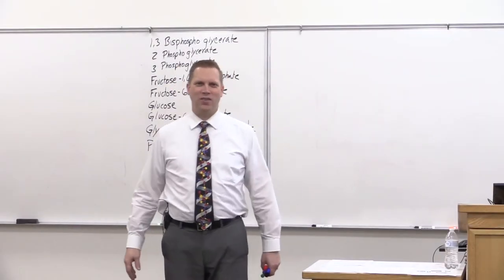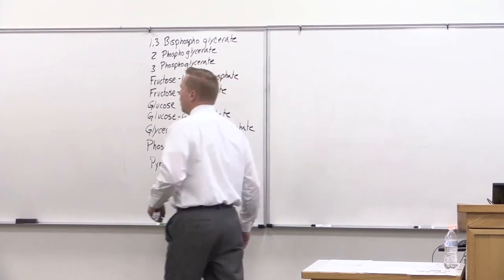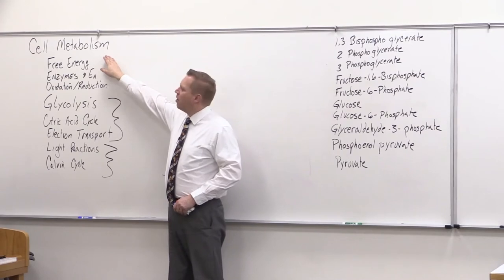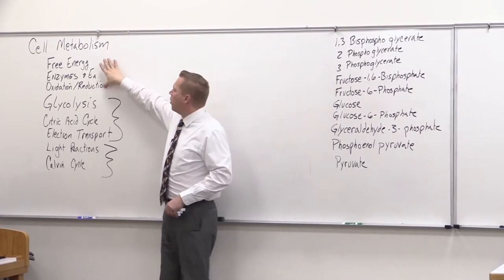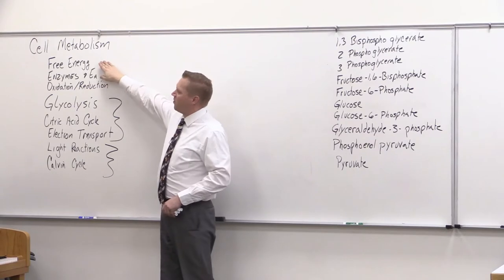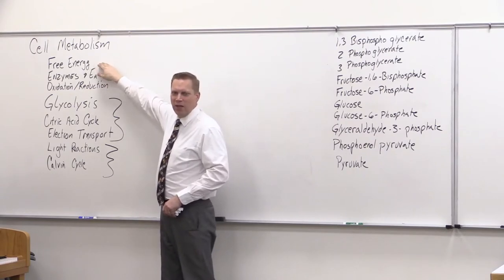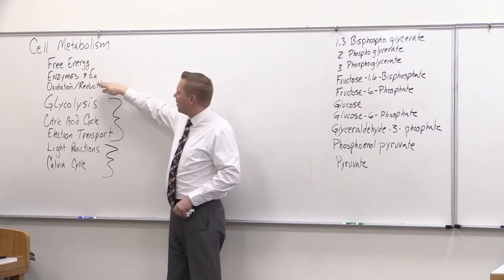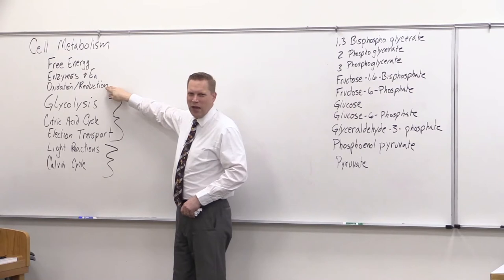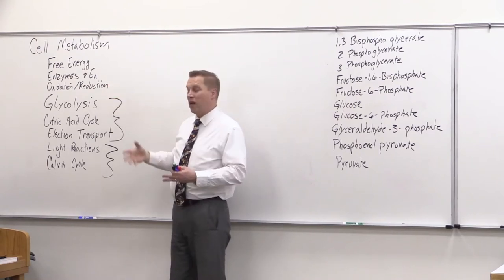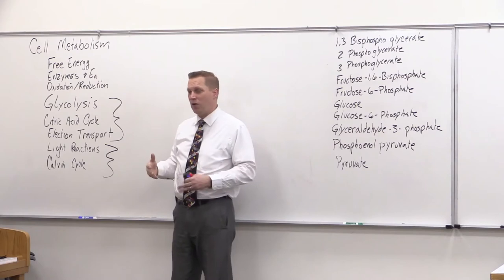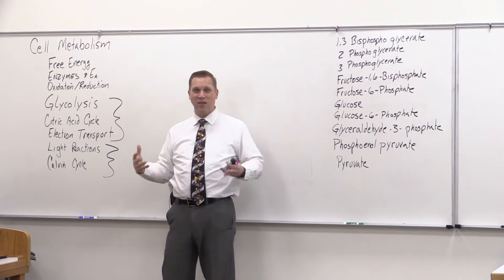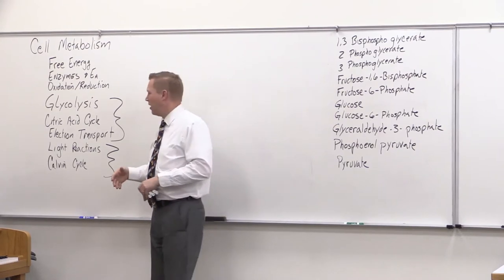Welcome back to our Bio 180 Lecture Series. Today we're continuing our discussion of cell metabolism. As a brief review, we've talked about free energy and ATP and how it supplies power to the cell, enzymes and the energy of activation, and oxidation-reduction reactions, because a lot of the energy produced comes from oxidation-reduction reactions. Now we're going to see some of those actual real-life oxidation-reduction reactions.